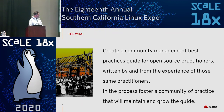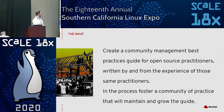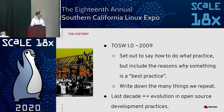So here's the vision — I'm actually going to read this because I wrote it this morning, realizing we didn't really have a good one. Our goal is to create a community management best practices guide for open source practitioners. That doesn't just mean community managers; it means anybody who's practicing open source in any way, written by and from the experience of those same practitioners. Any kind of community practitioner might have something to contribute or to learn from this. And in the process, foster a community of practice that will maintain and grow the guide.